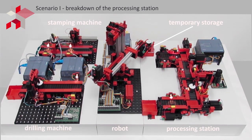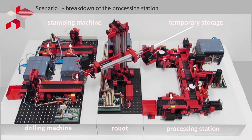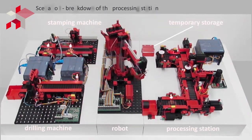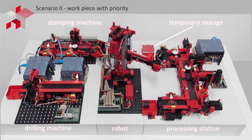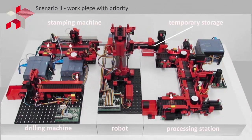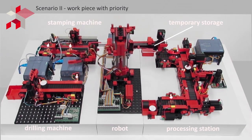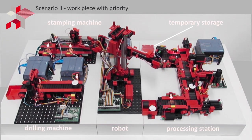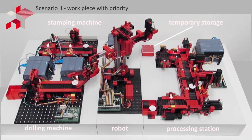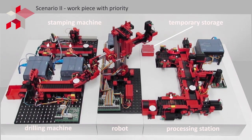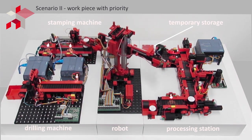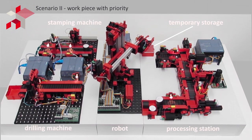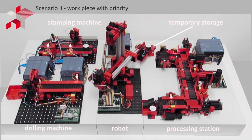The second scenario shows a part that has been prioritized. The RFID reader recognizes the piece with the priority flag and sends a corresponding signal to the transport robot and the drilling machine. The running process is stopped and the part is conveyed to the beginning of the transport belt. At the same time, the robot moves the part from the driller and puts it into temporary storage.